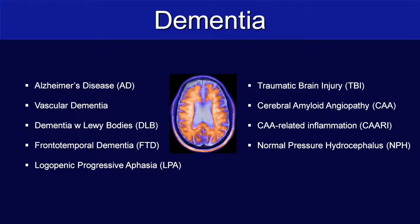Alzheimer's disease is the most common cause of dementia, but other dementias that we'll look at will be vascular dementia, dementia with Lewy bodies, FTD, logopenic progressive aphasia, TBI, cerebral amyloid angiopathy, CAA-related inflammation, and normal pressure hydrocephalus.